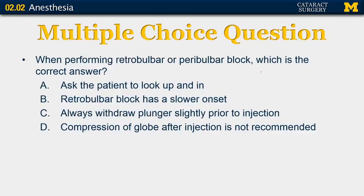When performing retrobulbar or peribulbar block, what is the correct answer? A: ask the patient to look up and in. B: retrobulbar block has a slower onset. C: always withdraw the plunger slightly prior to injection. Or D: compression of the globe after injection is not recommended. The correct answer is C — always withdraw the plunger slightly prior to injection, to make sure that you're not injecting intra-arterially.